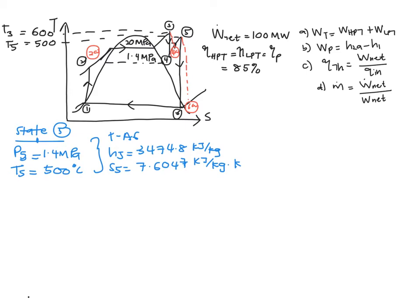Next is to solve for state 6, where P6 equals 20 kPa and S6 equals S5, which is 7.6047 kJ per kg·K.